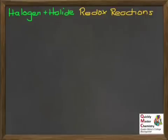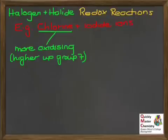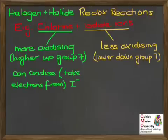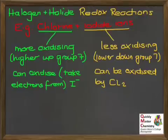Let's look at oxidising ability in the context of a reaction between a halogen and a halide ion, using the example of chlorine reacting with iodide ions. Chlorine is more oxidising than iodine because it is higher up the group. Being more oxidising, chlorine can oxidise the iodide ions — it takes electrons from them. The iodide ions, being from the less oxidising element, can be oxidised by the chlorine.